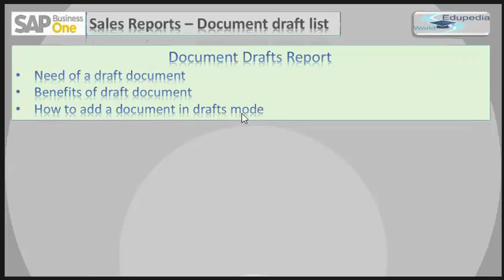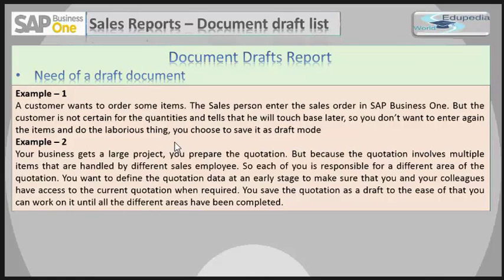Let's see some examples. The first example: a customer wants to order some items. The salesperson enters the sales order within the system, but the customer is not certain about the quantities and says he will provide them later. Since you do not want to re-enter all the items again, you choose to save it in draft mode.